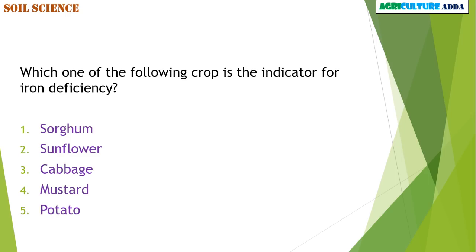Which one of the following crops is the indicator for iron deficiency? Sorghum, Sunflower, Cabbage, Mustard, or Potato? The answer is Sorghum.